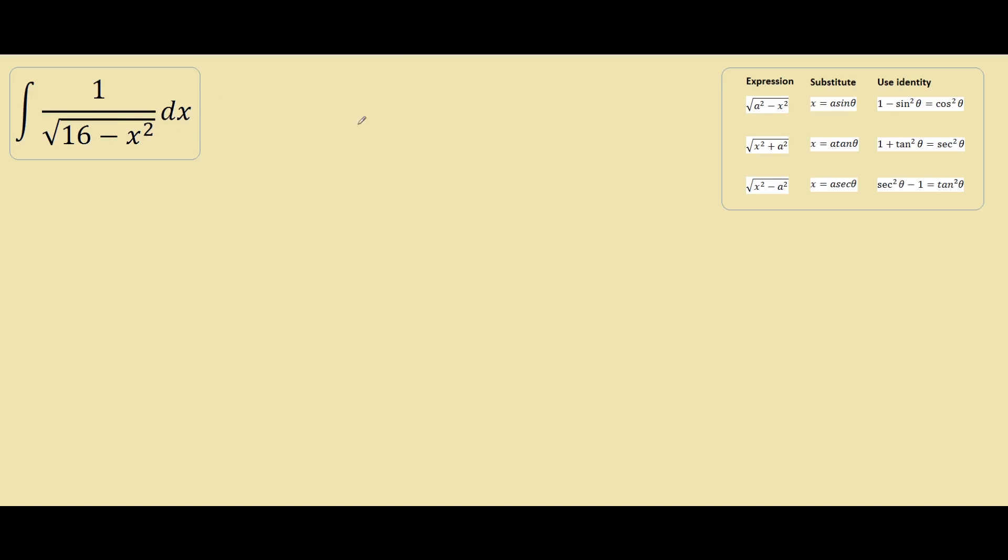So what you do is go to a reference table like this one, and we see that the expression is similar to the first row where we have 16 squared minus x squared, so we will be concentrating on the first row only.